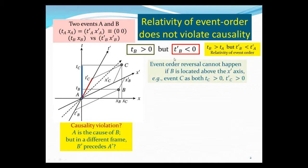The reason event order reversal can happen is that in order to have the order reversal, event B must be located below the x prime axis, in this region. For example, if you look at C—C is above x prime. T_C is positive and t_C prime is still positive, so compared with A, there's no reversal of order.